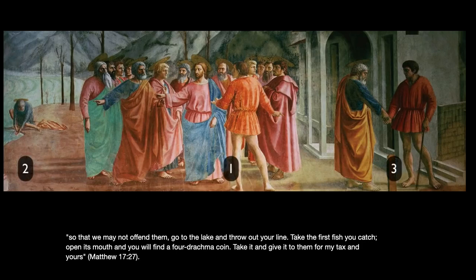Masaccio divided the story into three parts within the fresco. In the center, scene one, we see Jesus surrounded by his disciples — he tells Peter to retrieve the coin from the fish, while the tax collector stands in the foreground with his back to spectators and hand extended, awaiting payment. On the far left, scene two, we see Peter kneeling down and retrieving the money from the mouth of a fish. On the far right, scene three, St. Peter pays the tax collector.